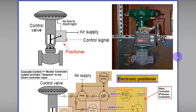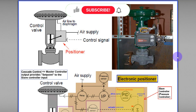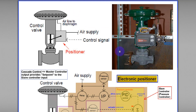Hello, today I am going to discuss the basic principle of operation of a positioner. First thing first — what is a positioner? A positioner is none other than a controller, but this controller is specifically designed for a control valve. We are trying to achieve the travel position or travel distance based on the set point given to the positioner.